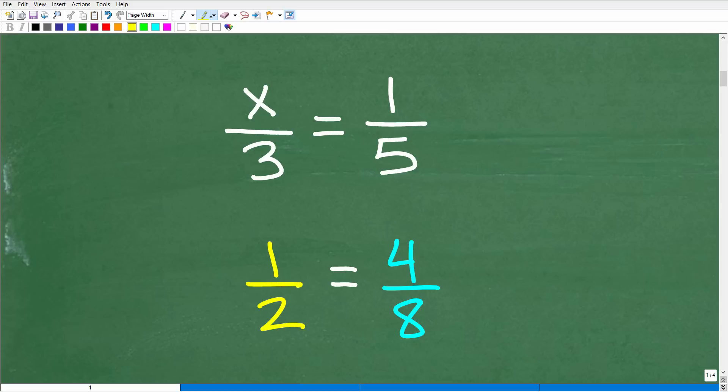So what is a proportion? Well, a proportion is two equal fractions. So in mathematics and algebra, when you see one fraction, and here we have a fraction, of course, the numerator up here is a variable, but it is a fraction. We have one fraction and it's equal to another fraction, just like this.